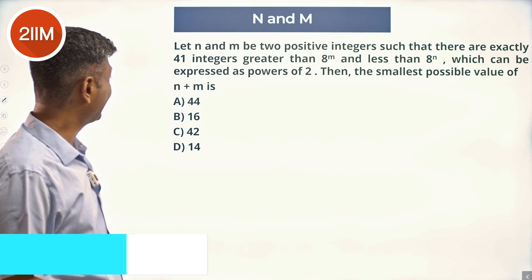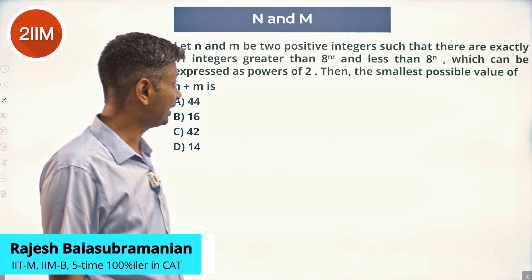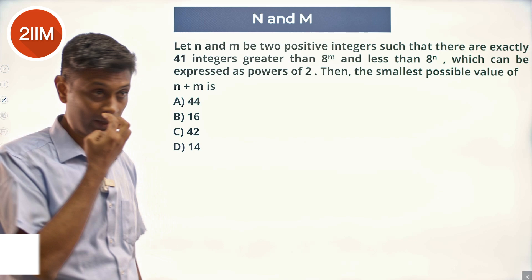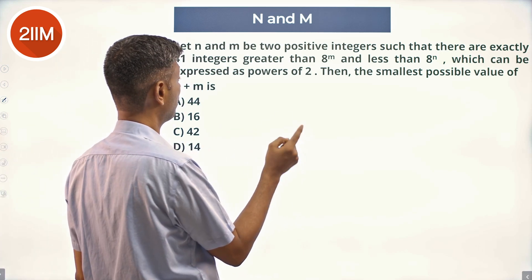Let n and m be two positive integers such that there are exactly 41 integers greater than 8^m and less than 8^n, which can be expressed as powers of 2.